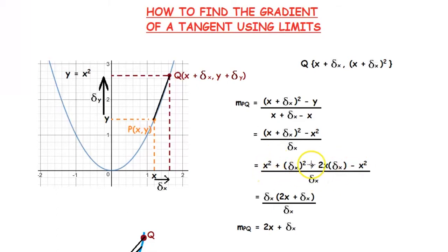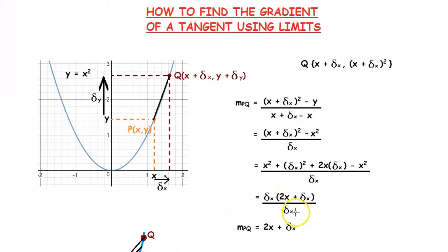So, the x² terms cancel off, giving us delta x(2x + delta x) divided by delta x. Then delta x cancels off, giving us the gradient of the chord PQ as 2x + delta x.